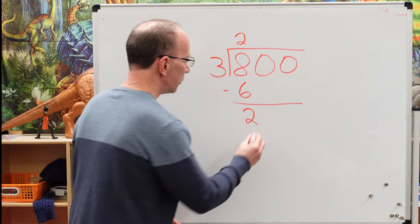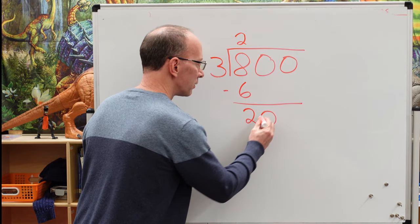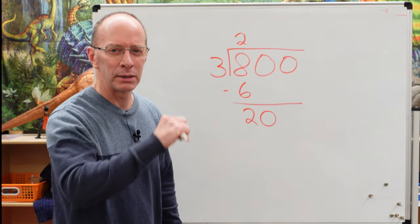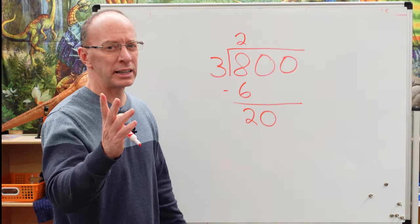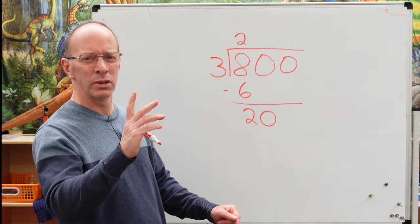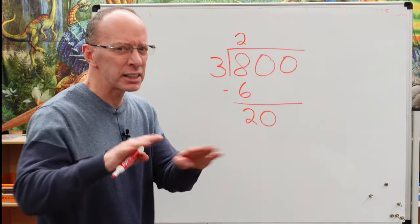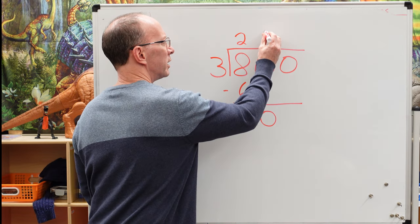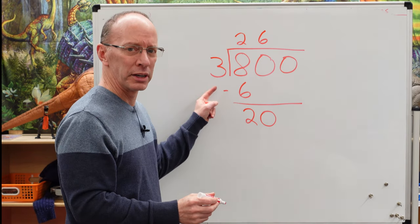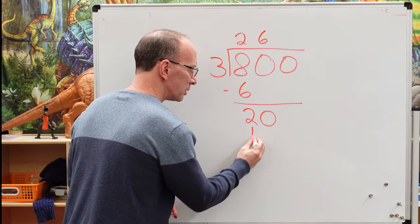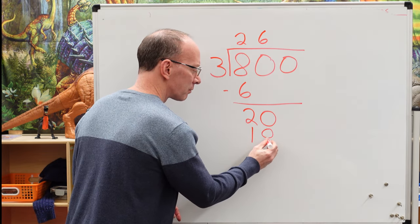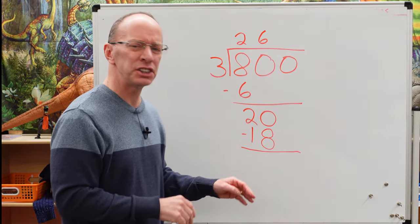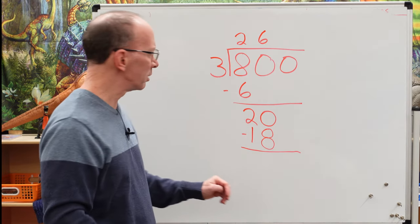Drop the 0 down right there. How many times can I put 3 into 20? 3 times 5 is 15. 3 times 6, 18. 3 times 7, 21. Too high. We got to stick it around 6. So 3 times 6. Let's put the 6 right up here. 6 times 3 equals 18. Put the 18 right there. See what I mean? We're taking it slow, easy, cheesy, step-by-step. Nothing to worry about.